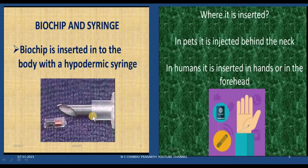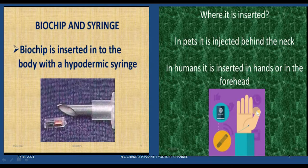In pets the biochip is inserted behind the neck, but in humans it is inserted in the hands or in the forehead. This injection using a hypodermic syringe is very safe and simple when compared to common vaccines.